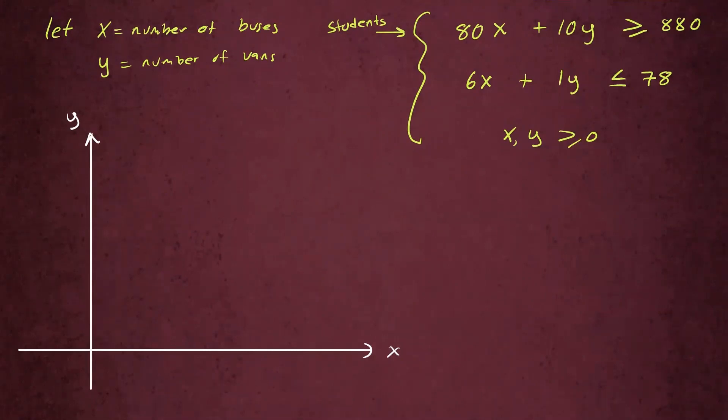Let's suppose that this is 11. And then for the Y intercept, we're going to set X equals 0, and we'll get 880 divided by 10. So that will be 88. So let's suppose it's right up here. It's 88. And if you connect them, you get a line. So perhaps something like this. Let's suppose this is 88. So that's the first inequality.